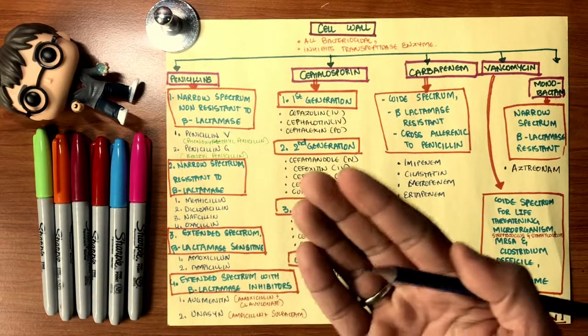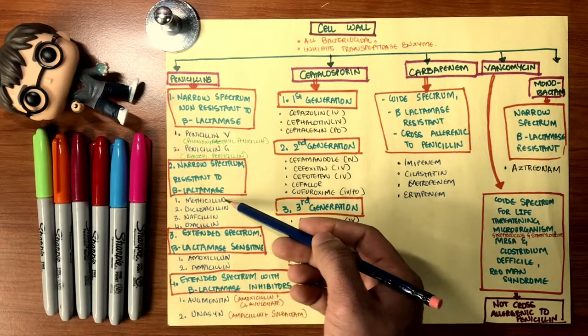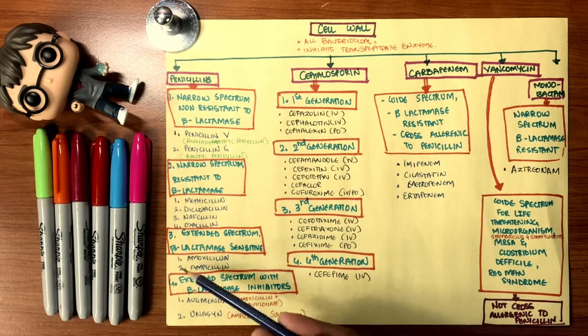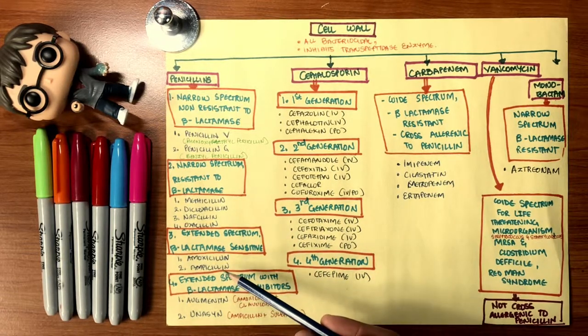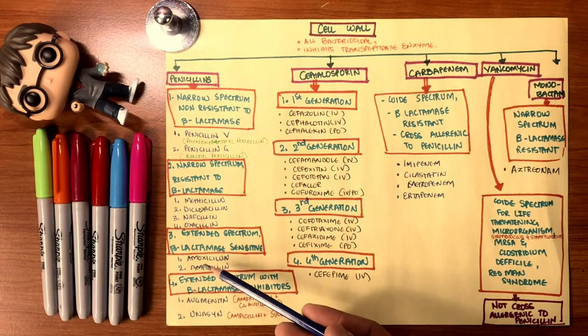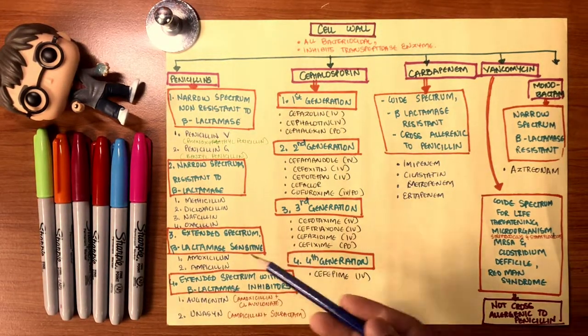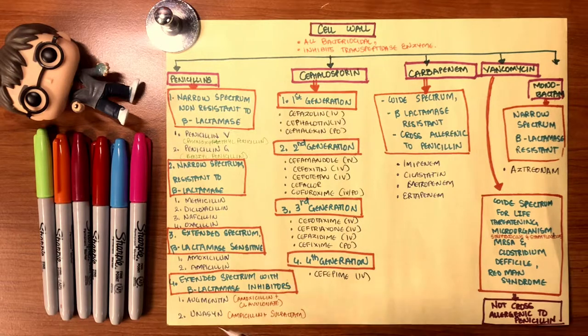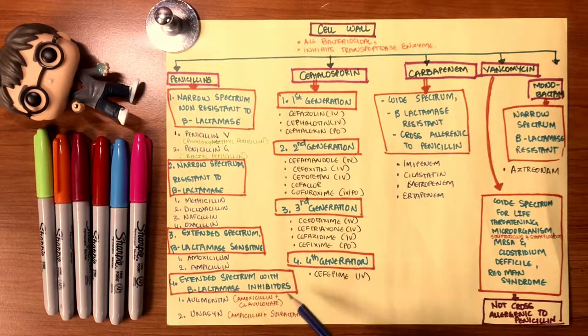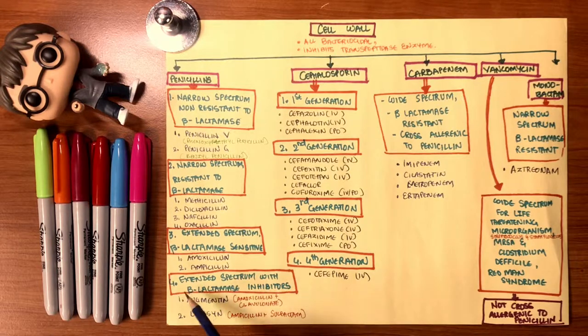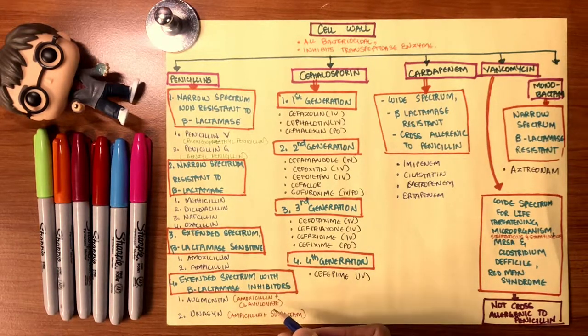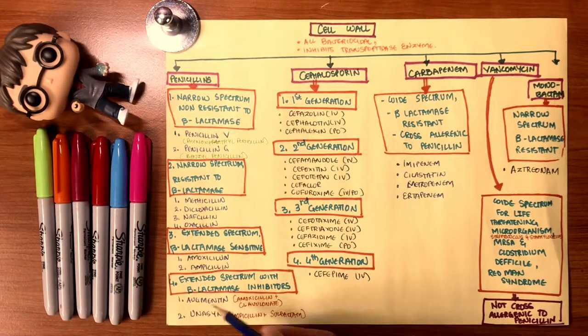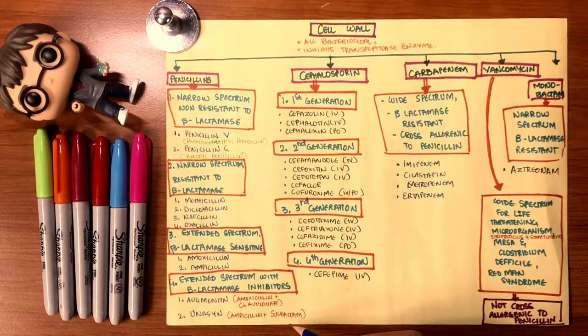Narrow spectrum resistant to beta-lactamase: these drugs will not let the bacteria break down the beta-lactam structure of the antibiotics, such as methicillin, dicloxacillin, nafcillin, oxacillin. Extended spectrum beta-lactamase sensitive: amoxicillin and ampicillin are both weak against the bacteria breaking down the structure of the antibiotic, but they're very good because they're extended spectrum, which means they have a wide range of antibiotic effect. Extended spectrum with beta-lactamase inhibitors: these are separate molecules used in conjunction with amoxicillin or ampicillin, such as amoxicillin plus clavulanate, which makes Augmentin, or ampicillin with sulbactam, which makes Unasyn.